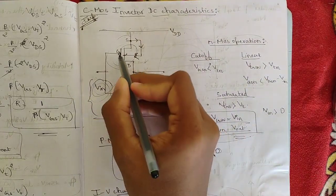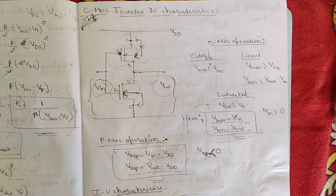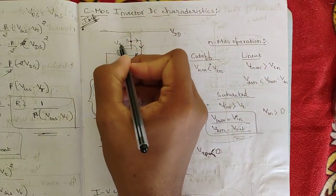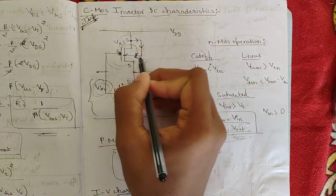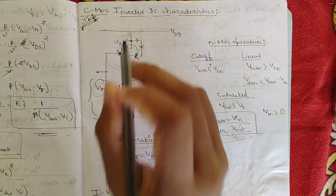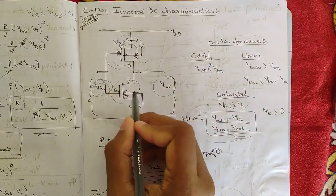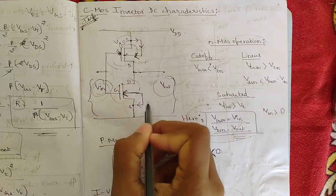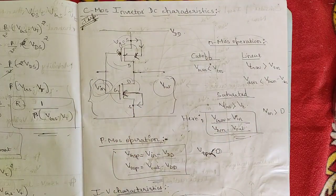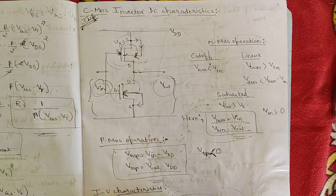For the NMOS, the gate-to-source voltage equals VIN because the body terminal is fetched back to VDD, giving VGSN = VIN, and VDSN = VOUT. For the PMOS transistor, VGSP = VIN − VDD and VDSP = VOUT − VDD, where VTP is less than zero.